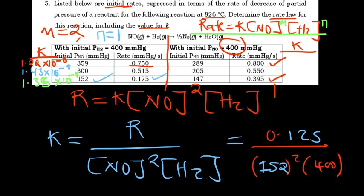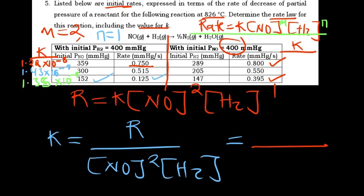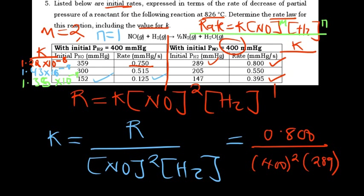Crossing to the other side of the table, things swap. Now nitrogen oxide is constant at 400 squared and hydrogen is changing. For experiment 4, the rate was 0.800 and the hydrogen partial pressure was 289. K = 0.800 / (400² × 289), giving approximately 1.73 × 10⁻⁸.